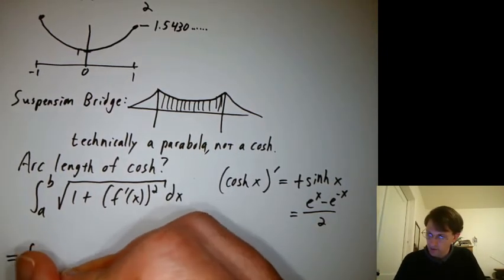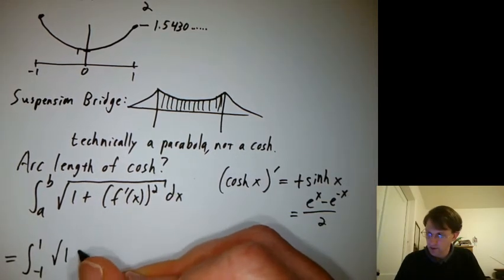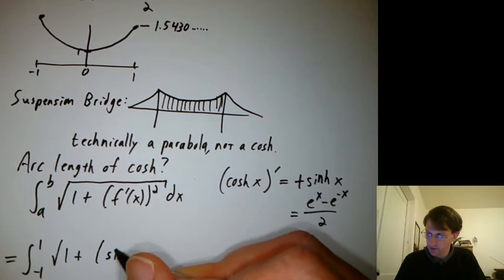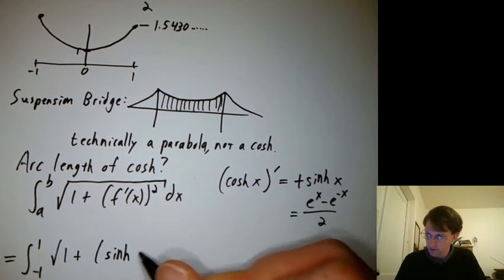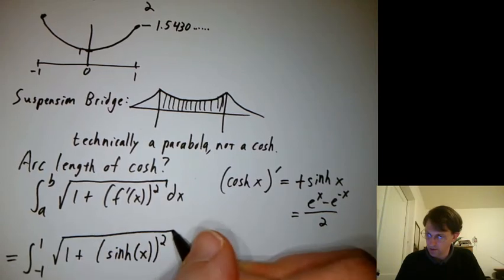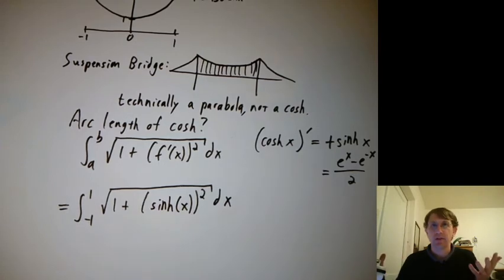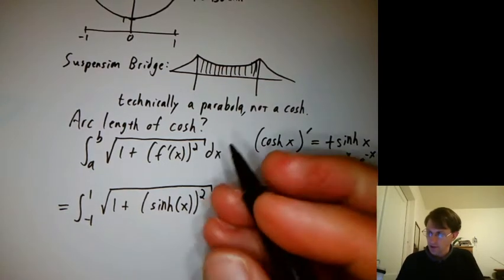So then we're integrating negative 1 to 1, integral of square root of 1 plus sinh of x squared dx. And now what's the integral of 1 plus sinh squared x?